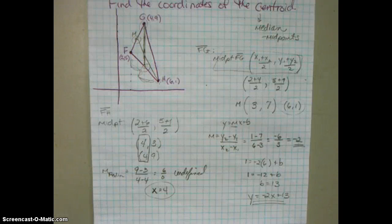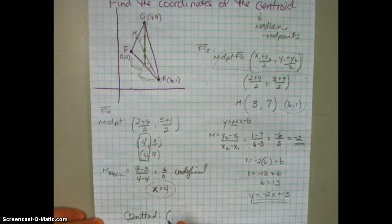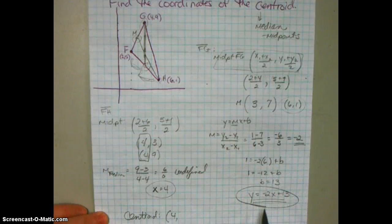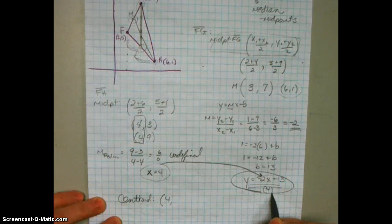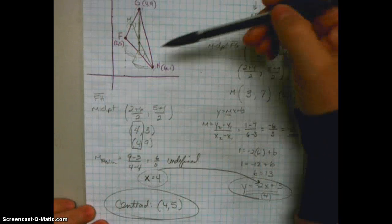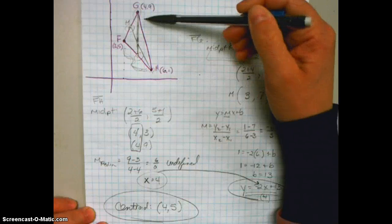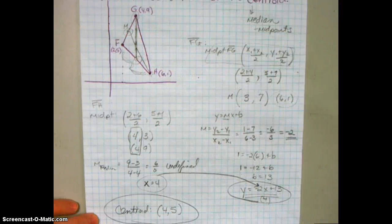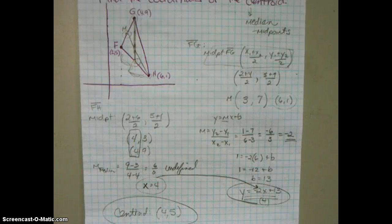Now we need to find the coordinates of the centroid — and we already have the X coordinate: X = 4. Substituting into the other median's equation: Y = −2(4) + 13 = −8 + 13 = 5. So the centroid is at (4, 5). If I were to do the third median from F to the midpoint of GH, it would intersect at the same point (4, 5). I'm going to do another example using the same triangle but with two different medians to avoid that vertical line.